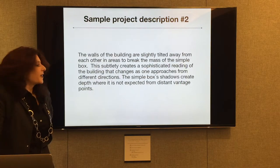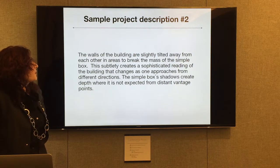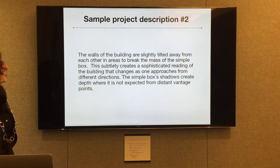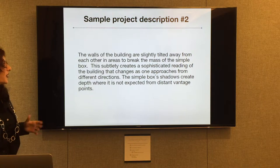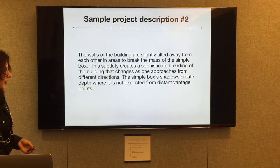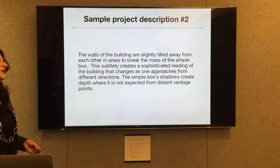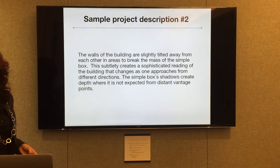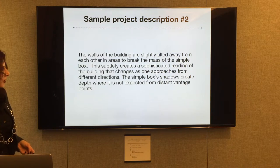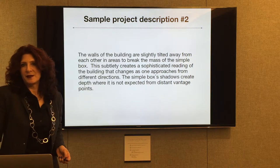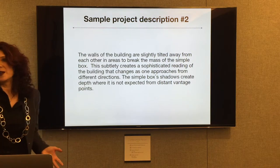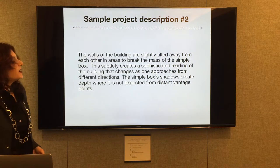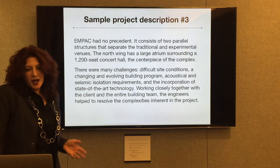Here's another one: 'The walls of the building are slightly tilted away from each other in areas to break the mass of the simple box. This subtlety creates a sophisticated reading of the building that changes as one approaches from different directions. The simple box's shadows create depth where it is not expected from distant vantage points.' Can you imagine reading this in the New York Times?